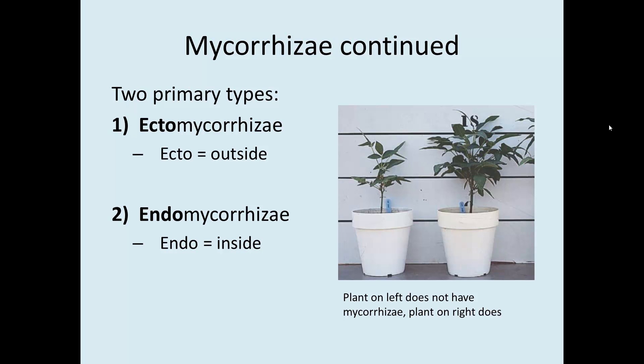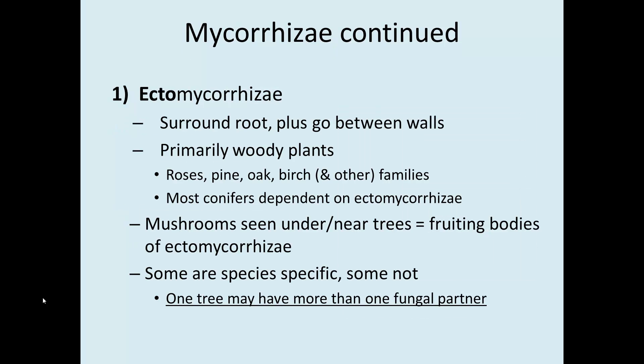You can see that the plant on the right is mycorrhizal and the one on the left is not — clearly more vigorous, with everything else held the same. There are two main types of mycorrhizae: ectomycorrhizae, meaning outside, where the fungus stays outside the root; and endomycorrhizae, where the fungal mycelium actually penetrates the roots and is inside the cells. For ectomycorrhizae, the fungus surrounds the roots and goes between cell walls but does not go inside the cells.